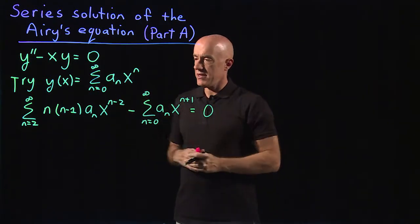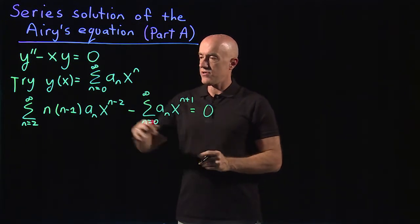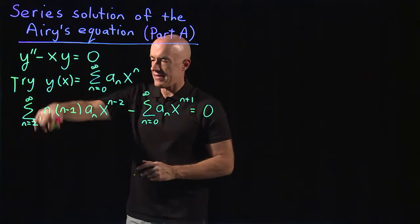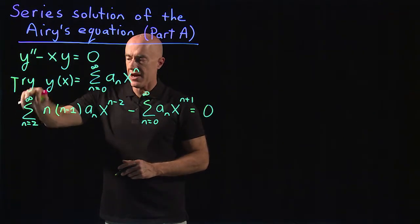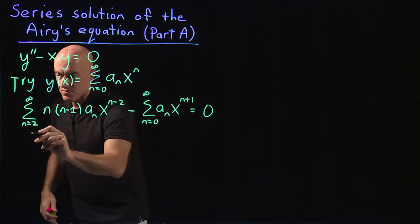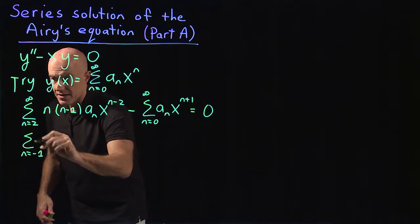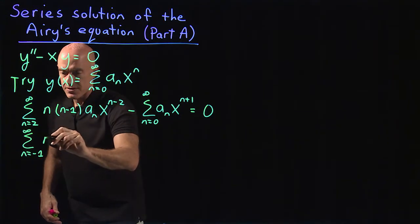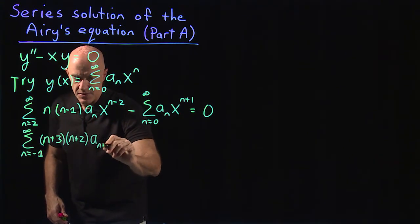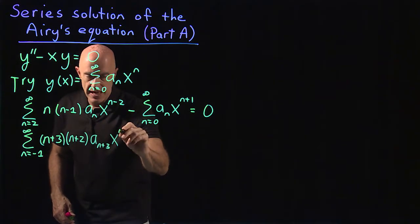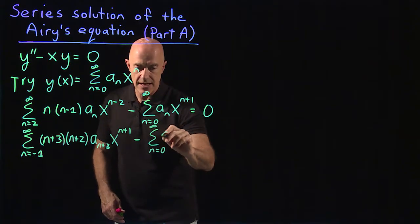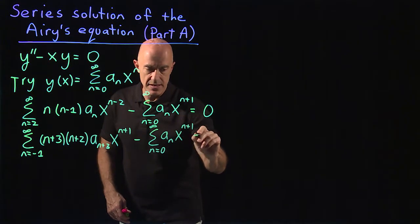We need to combine this into a single power series. We can do that by lifting the first sum up to match x to the (n plus one): we shift the summation index down by three and all the n's up by three. We get the sum from n equals minus one to infinity of (n plus three)(n plus two) times a sub (n plus three) times x to the (n plus one), minus the sum from n equals zero to infinity of a sub n times x to the (n plus one), equals zero.